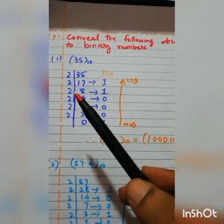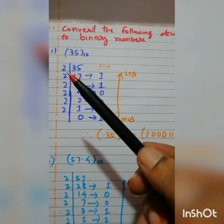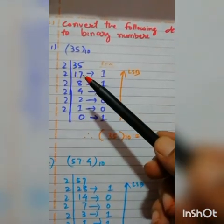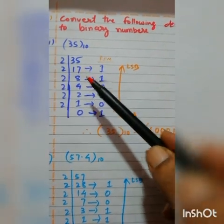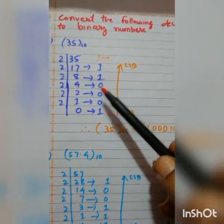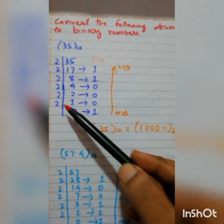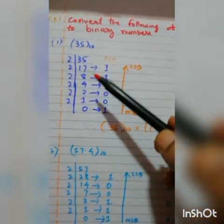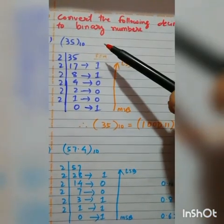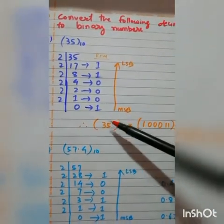Now this is how to convert decimal to binary. We discussed binary to decimal; now this is decimal to binary. Instead of multiplying, here we divide by the base 2. Divide 35 by 2: quotient 17, remainder 1. Divide 17 by 2: quotient 8, remainder 1. Divide 8 by 2: quotient 4, remainder 0. Divide 4 by 2: quotient 2, remainder 0. Divide 2 by 2: quotient 1, remainder 0. Divide 1 by 2: quotient 0, remainder 1. Repeat division until the quotient becomes 0, writing the remainder each time. The remainders will always be 1s and 0s.